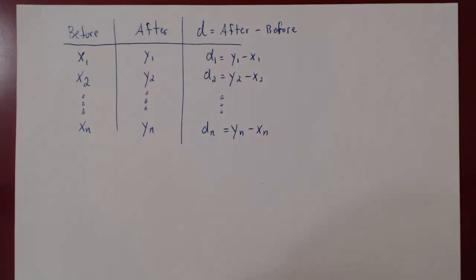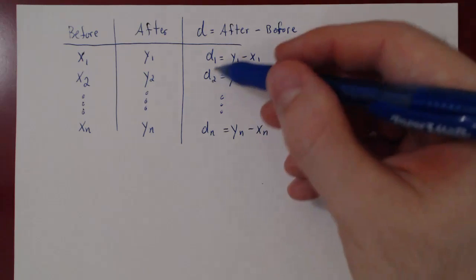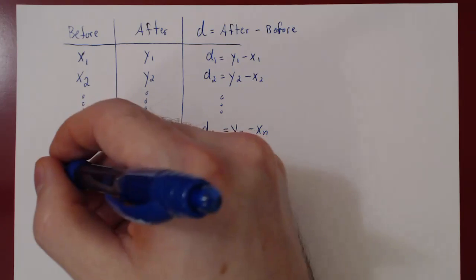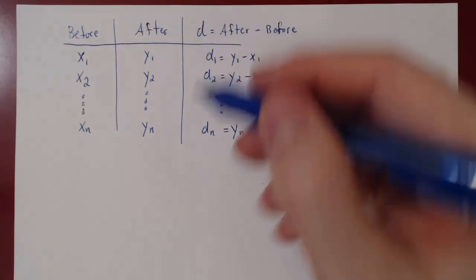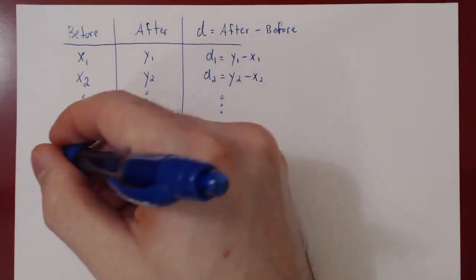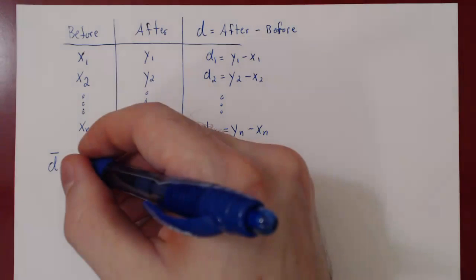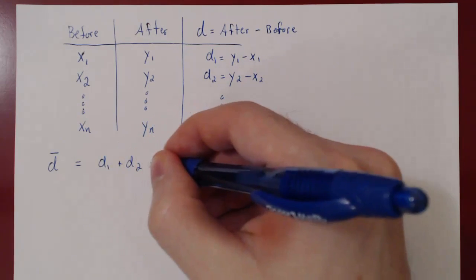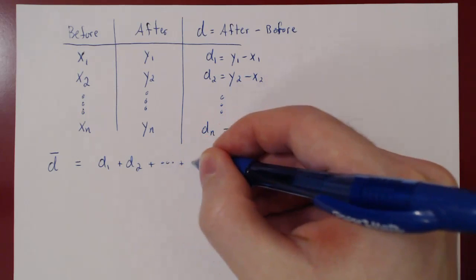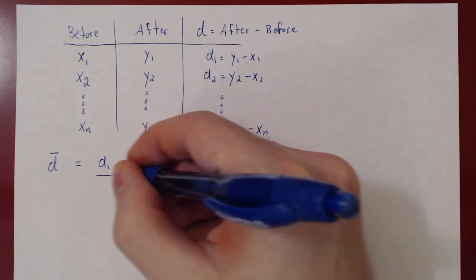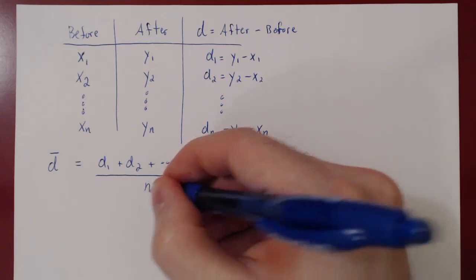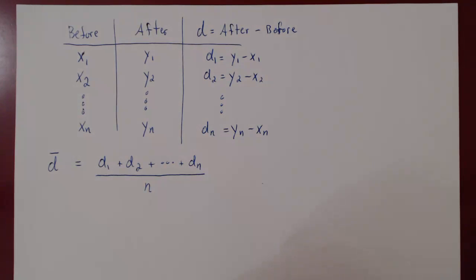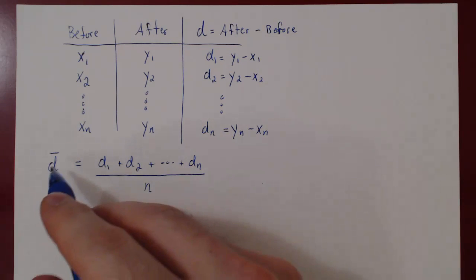Well, the first thing we need is our sample mean and our sample deviation for the differences. So, as always, since we use d for difference, we will use d bar for the sample mean. And again, we simply add our n differences and divide by n.